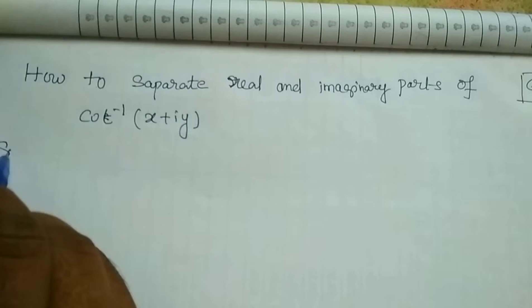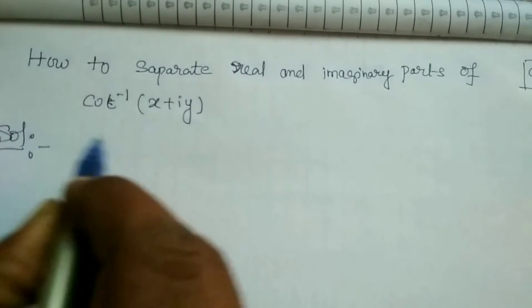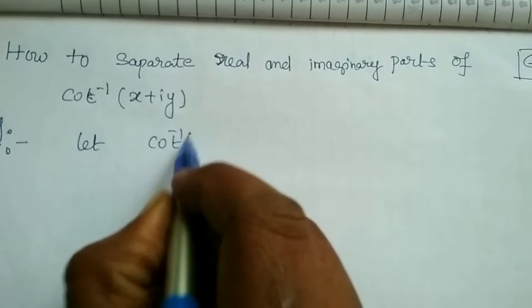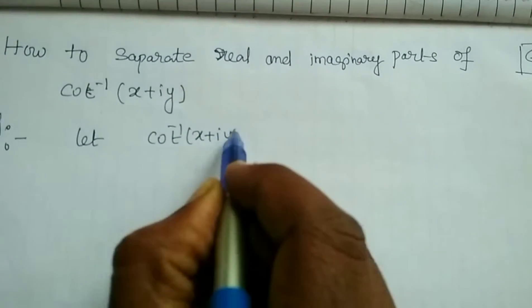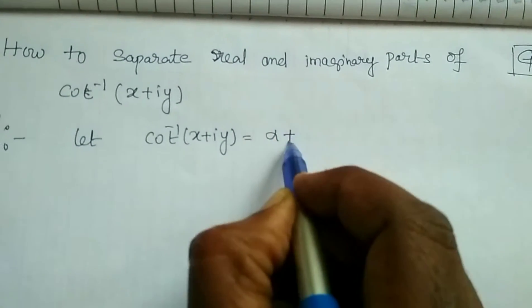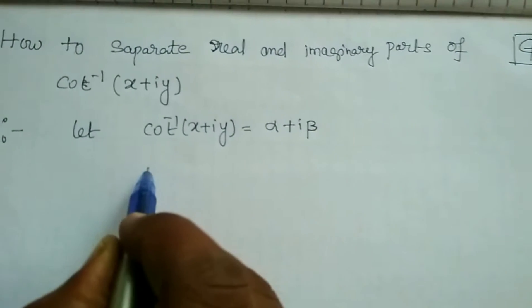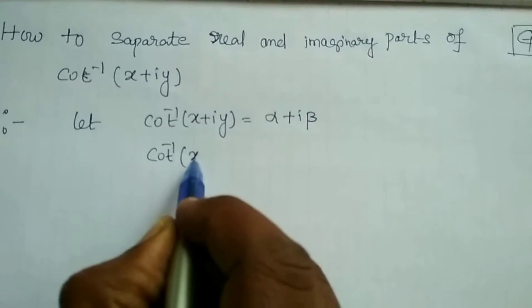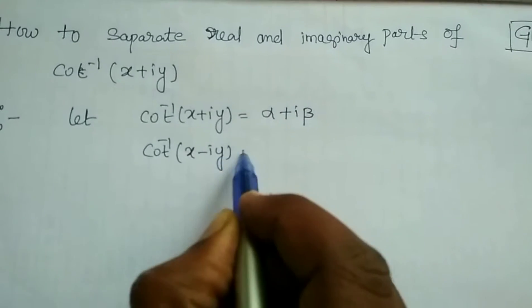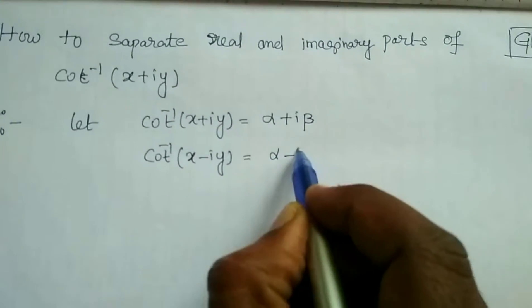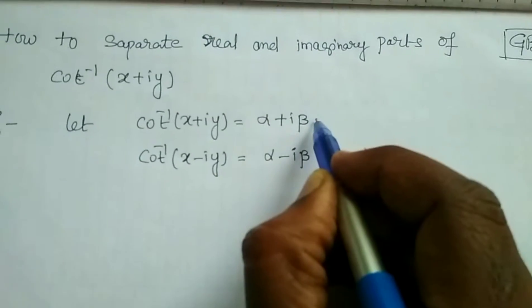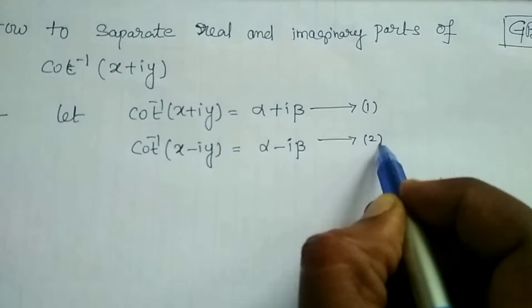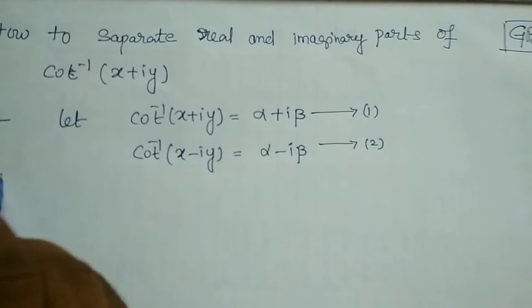So the solution is: let we consider cot inverse of x plus i y is equal to alpha plus i beta — this is equation number 1. Similarly, cot inverse of x minus i y is equal to alpha minus i beta — this is equation number 2.